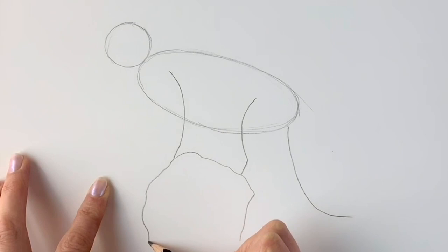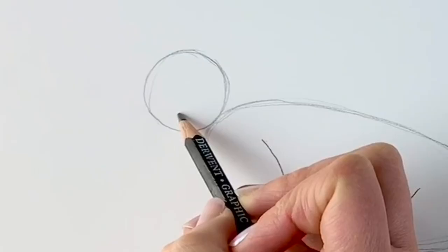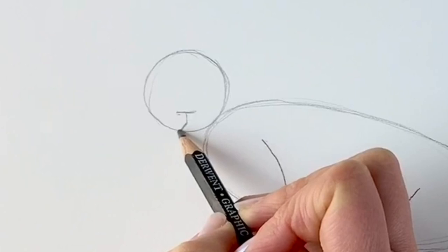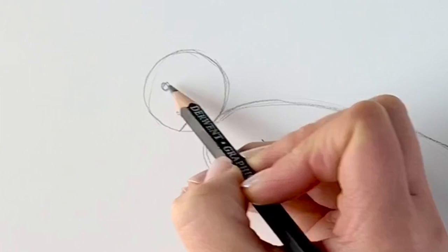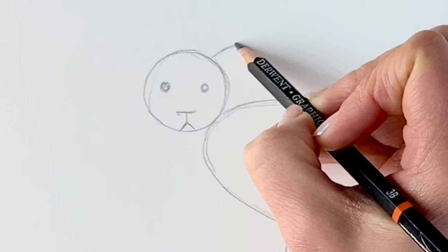Now we're going to be doing the nose, which is just one line going across just like this, one line going down, and a little fork like that. You can be adding the eyes, so one little circle here, one little circle there.